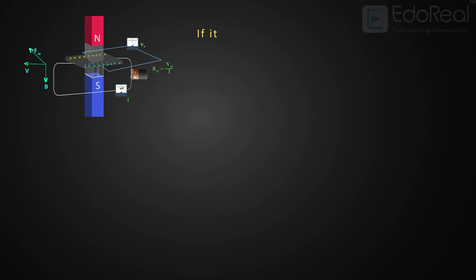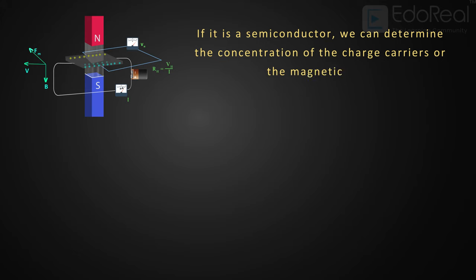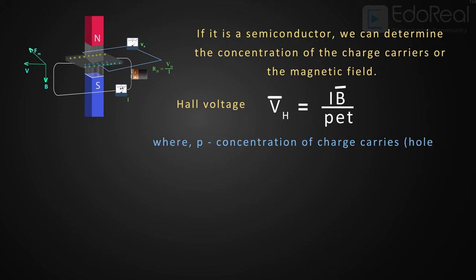If it is a semiconductor, we can determine the concentration of the charge carriers or the magnetic field. The Hall voltage is given by the expression where p is the concentration of charge carriers, t is the thickness of the semiconductor, e is the charge of an electron. Then the Hall coefficient Rh is given by this formula.